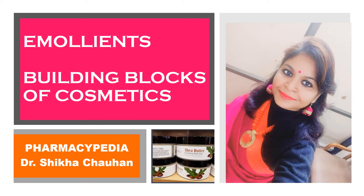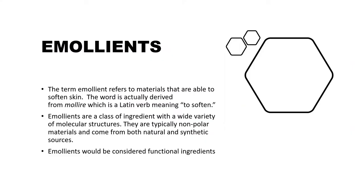Welcome to Pharmacypedia. In this video we are going to discuss emollients, which are one of the building blocks of cosmetics and are used in a wide range of cosmetics and cosmeceuticals. Emollients are substances which help to soften the skin. They are derived from the Latin word 'mollire' which means to soften out, and they are incorporated into a wide range of cosmetic products to soften the skin and hair.